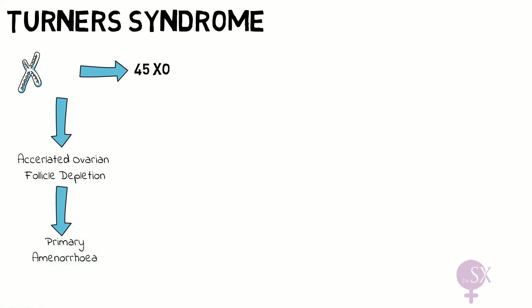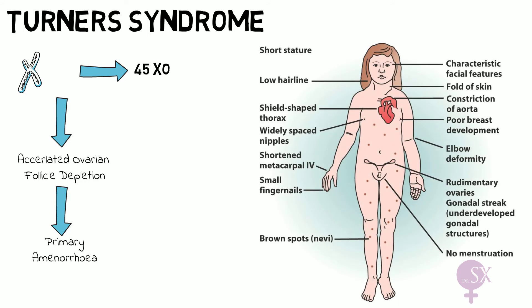Turner syndrome patients have characteristic physical features: short stature, a low hairline, characteristic facial features, a webbed neck. They are at higher risk of aortic coarctation and will have poor breast development. They typically have a shield-shaped thorax, widely spaced nipples, an elbow deformity known as cubitus valgus, rudimentary ovaries, and characteristic nevi — brown spots on the skin — and of course, no menstruation.